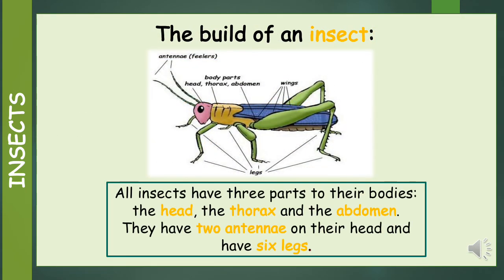Let's look at the build of an insect. All insects have three parts to their bodies: the head, the thorax, and the abdomen. They have two antennae or feelers on their head and they have six legs.